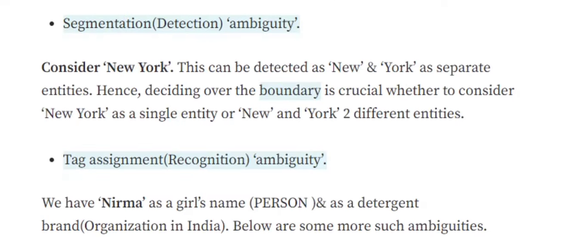There are two or three major problems we may face. One is segmentation ambiguity. For example, in the sentence 'New York is the best city to live in', the two words 'New' and 'York' combine to form a single entity — a city name. Training a system to consider these two words as a single entity is difficult.